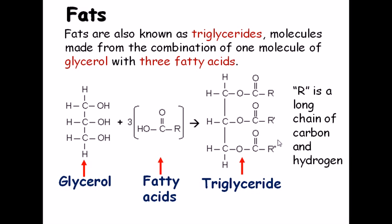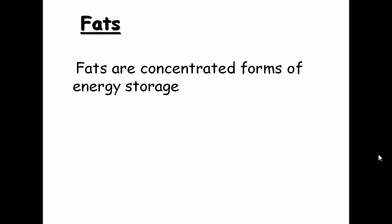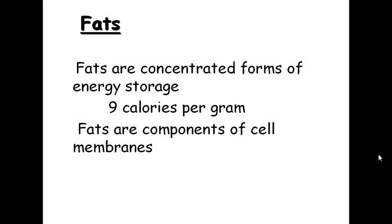Fats are a concentrated form of energy storage because nine calories per gram of energy can be provided by fat. Animals store excess energy as fat in the adipose tissues. During fasting conditions, those fats are broken down and ultimately converted into glucose — the most reliable and available form of energy — to produce energy and run all cellular processes. That's the basic overview of the biochemistry of life.